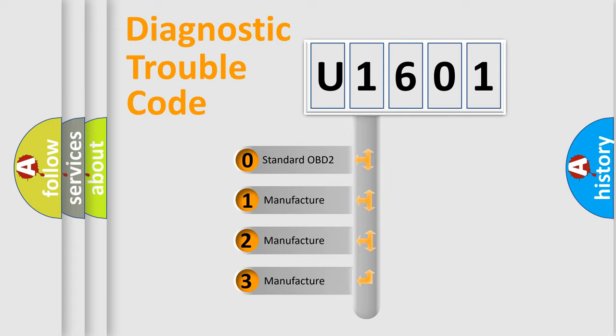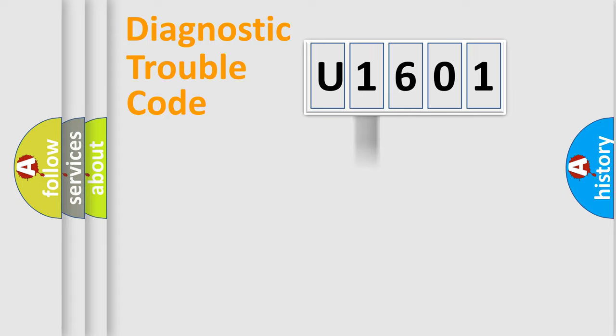If the second character is expressed as zero, it is a standardized error. In the case of numbers 1, 2, or 3, it is a more specific expression of the car-specific error.